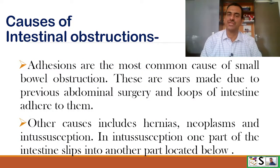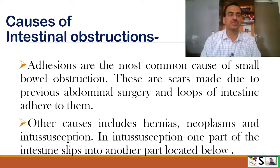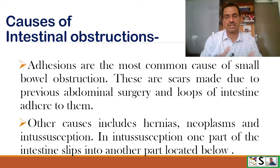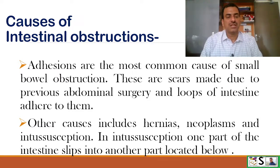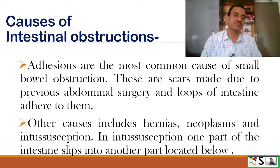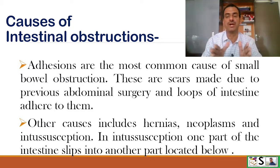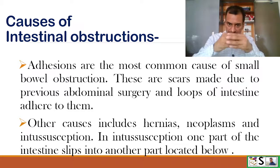Causes of intestinal obstruction: Adhesions are the most common cause of small intestine obstruction. These are scars due to any previous abdominal surgery where loops of the intestine adhere to these scars. Other causes include hernia, neoplasm, and intussusception, where one part of the intestine slips into another part and its lumen becomes narrow.